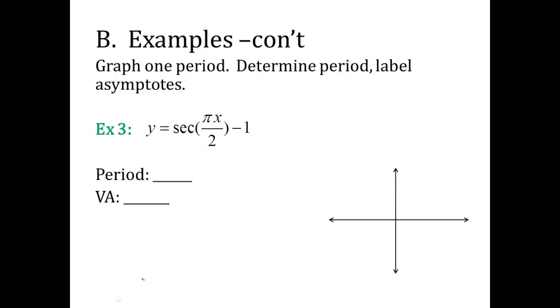One more example, another secant graph. A is 1, so nothing's changing with my y values. B is π/2. Let's talk about our period: 2π over π/2. I've got to do keep it, change it, flip it. The π will cancel and the period is 4. There is no C. The C would occur within those parentheses, so my C is 0. My D is negative 1, so my y values, I'm going to subtract 1 from it. Normally y is at 1, so now my y is at 0. Other y would be negative 1. If I subtract 1, that's negative 2. It's just vertically moving me down one point.